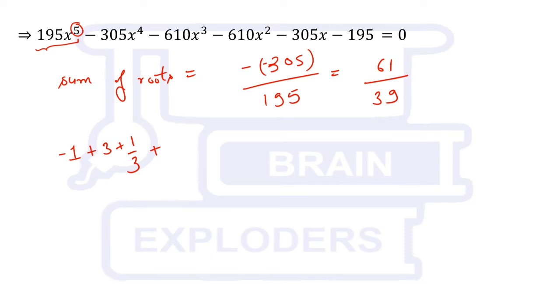Either there are 2 non-real roots or there will be 4 non-real roots. There are not 4 because 3 are already real, so remaining 2 will be non-real. So sum of non-real roots is equal to 61 over 39.